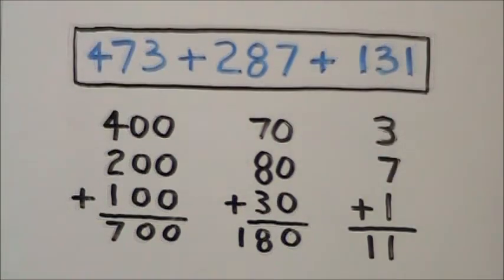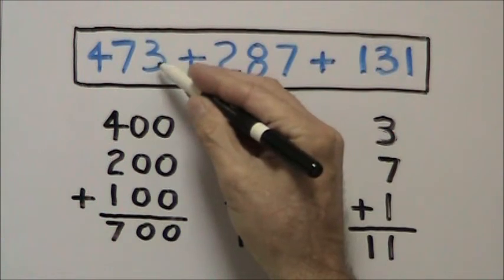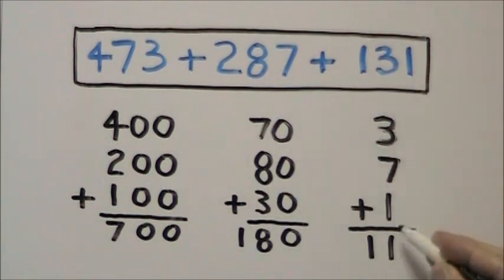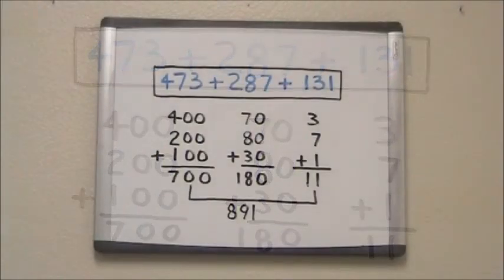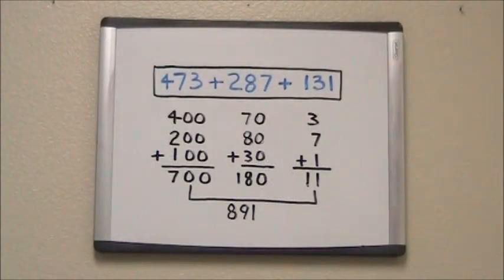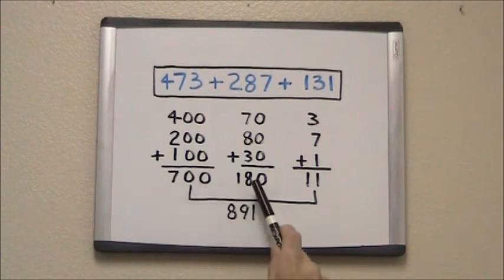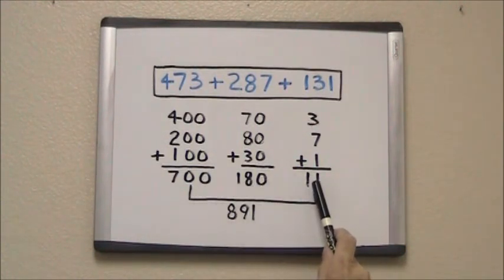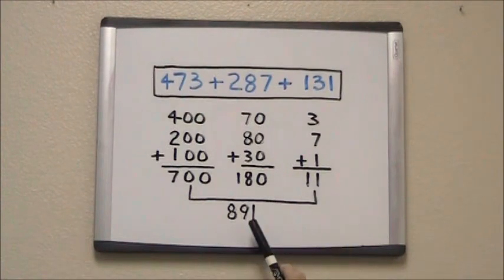Finally, we add up our ones column, 3 plus 7 plus 1 to get 11. Now all we do is add up our three numbers. 700 plus 180 gives us 880. Add 11 to give us our final answer of 891.